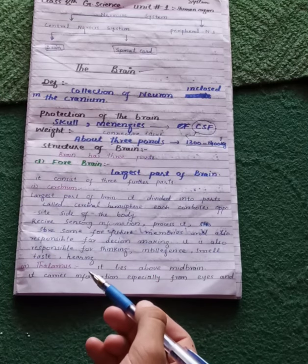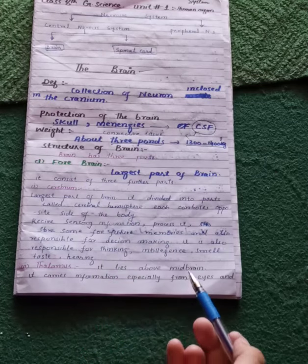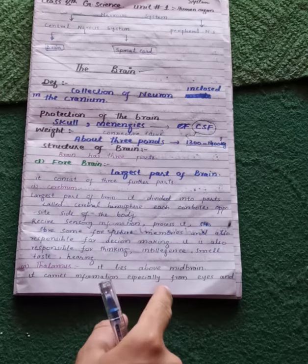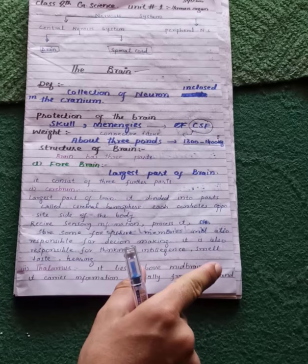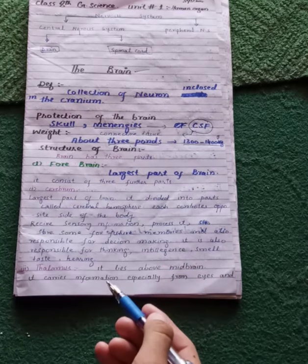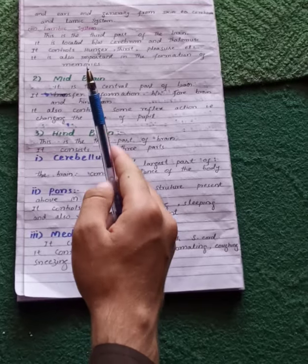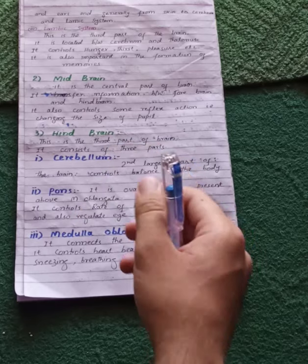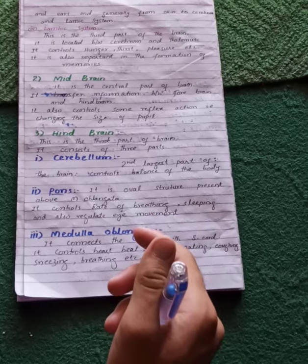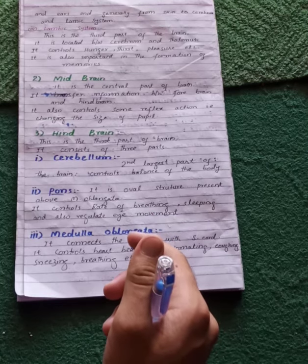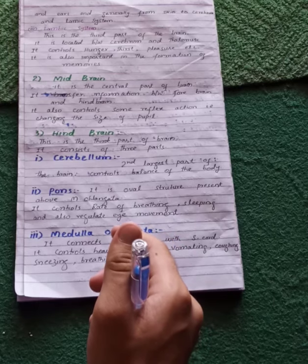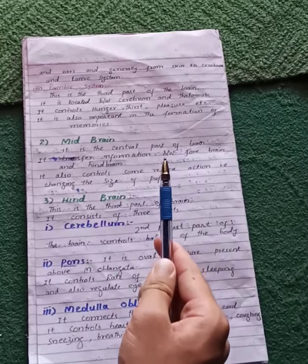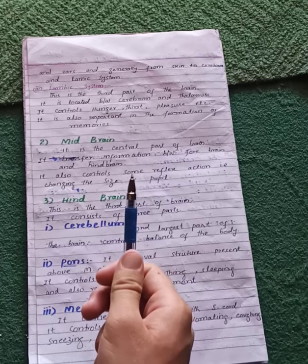The third part of the forebrain is the thalamus. The thalamus is located above the midbrain and is part of the forebrain. It carries sensory information — especially from the eyes and ears, and generally from the skin — to the cerebrum and the limbic system.